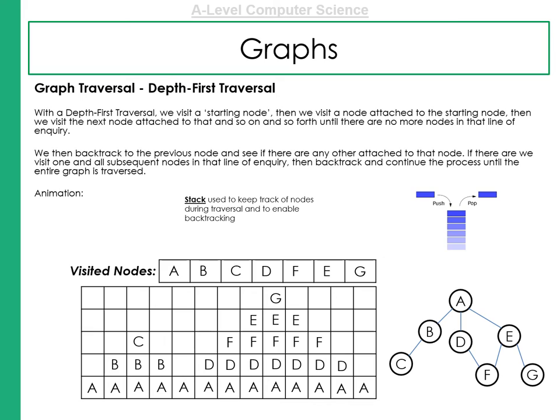Like we had with a tree, we've got a depth first traversal. So here you can see our tree example, but it's similar to a graph. We can almost think of it like a graph, like a tree. We have a starting node. We visit all the nodes attached to the starting node. Then we visit the node attached to that and so on until all the nodes are formed the lines of inquiry. Remember, a depth first tree traversal would start at a root node.